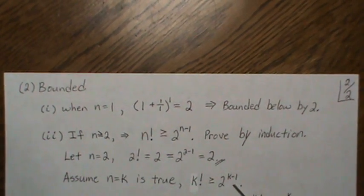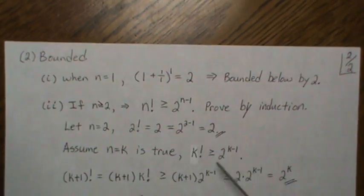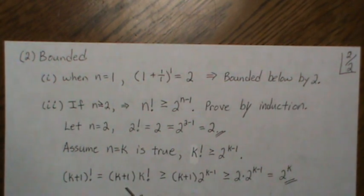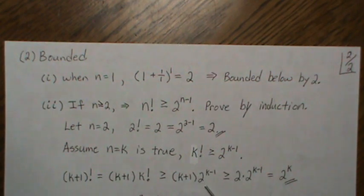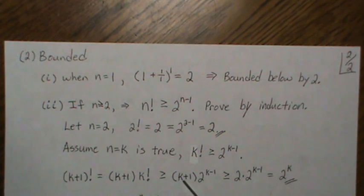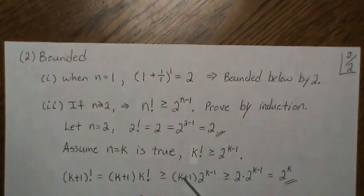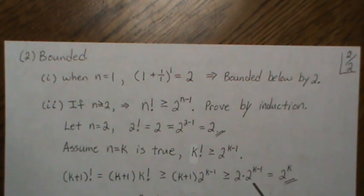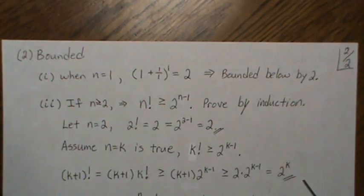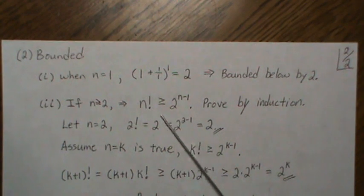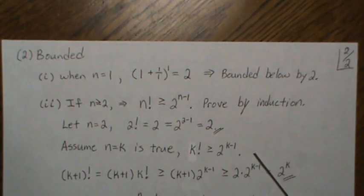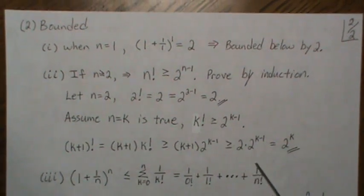So we assume k! ≥ 2^(k-1). Then (k+1)! = (k+1) · k!, and by the inductive hypothesis this is ≥ (k+1) · 2^(k-1). Since k ≥ 2, we have k+1 ≥ 2, so replacing k+1 by 2 makes it a little smaller, giving us 2 · 2^(k-1) = 2^k. This is exactly what we wanted to show, so n! ≥ 2^(n-1) holds for all n ≥ 2.